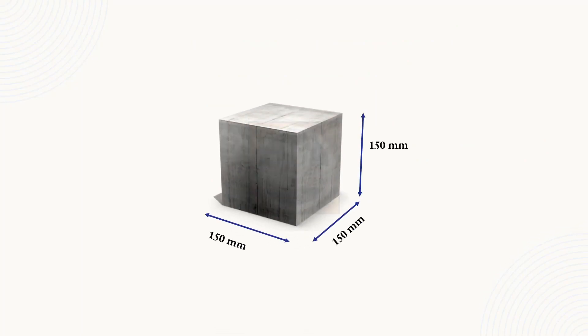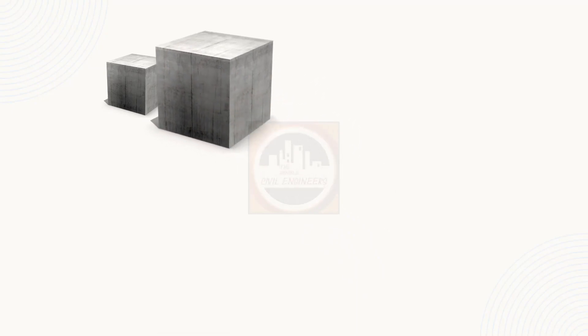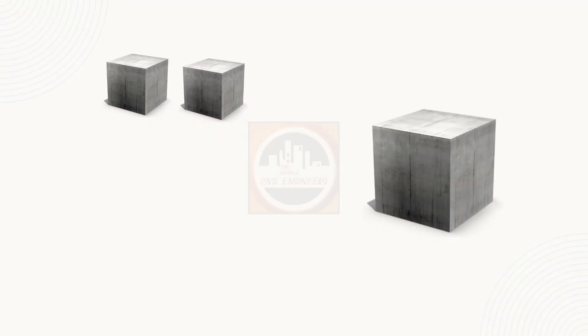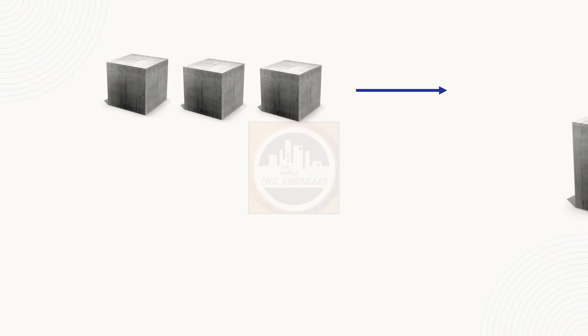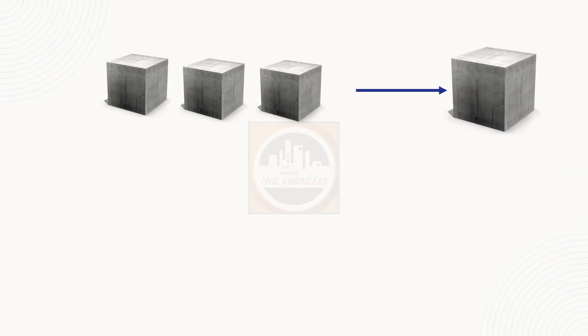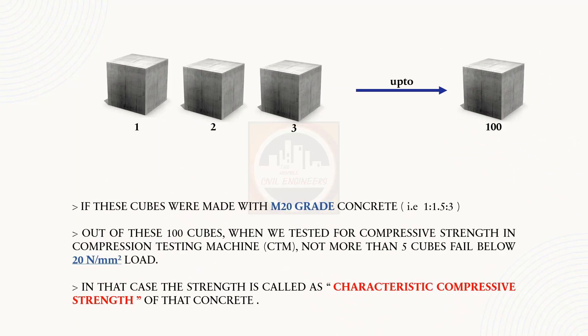Now let us consider cubes with dimensions of 150 mm × 150 mm × 150 mm according to the Indian Standard code, and take 100 such cubes. If these cubes are made with M20 grade concrete, the mix proportion is 1:1.5:3.